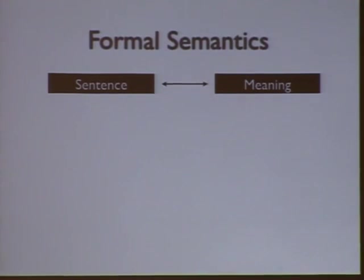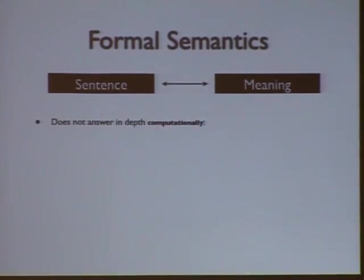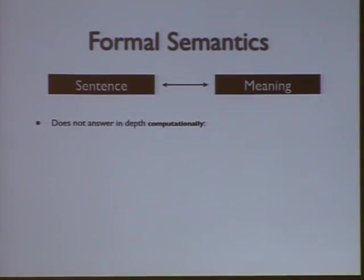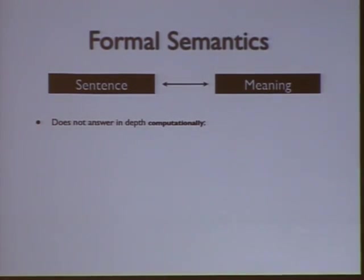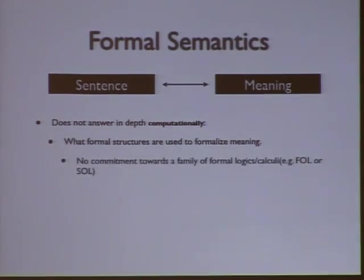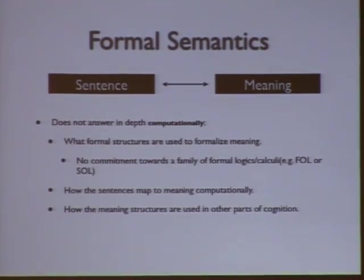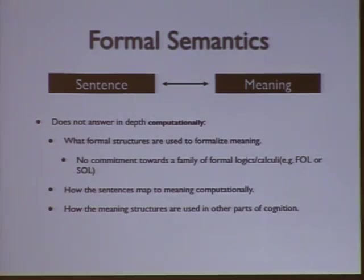Essentially what we want to do with natural language processing is take some arbitrary sentence in English, or whatever language, and find a very precise meaning for it. People familiar with this work might say that natural language statements have, because of the inherent ambiguity in human languages, many different interpretations. But we want to say that most, if not all, of those interpretations have formal definitions or formal ways of writing them out. We want to figure out what formal structures we can use to formalize the meanings or possible interpretations of sentences, without committing to a particular family of formal logics, and figure out how to map sentences to meaning computationally.